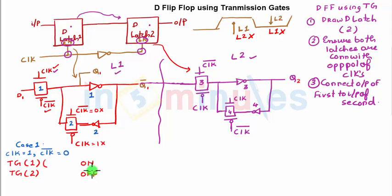Let's go ahead and see what's happening on this side. Clock is 1 so clock bar is 0, so my transmission gate 3 is also off. And my transmission gate 4: clock is 1, clock bar is 0, so transmission gate 4 is on. So we have identified transmission gates 1 and 4 to be on, and transmission gates 2 and 3 to be off.